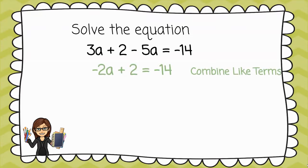3a minus 5a would give me negative 2a. And again, that's not a solving step as much as it is a simplifying step.